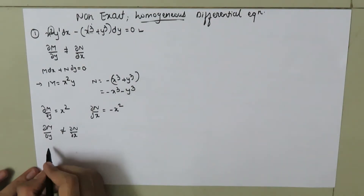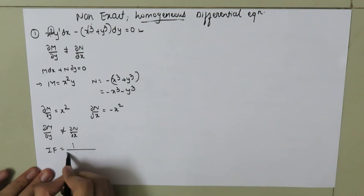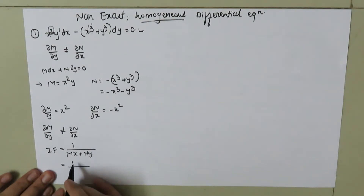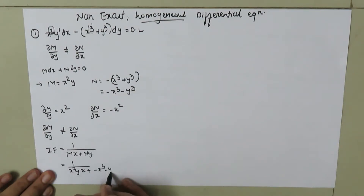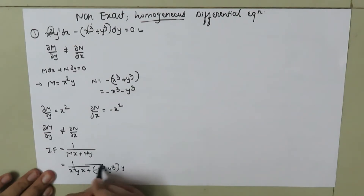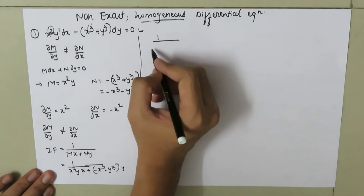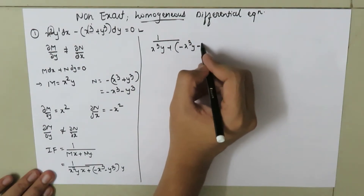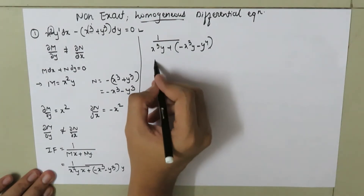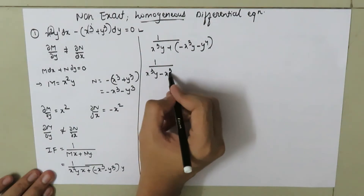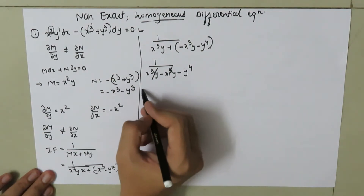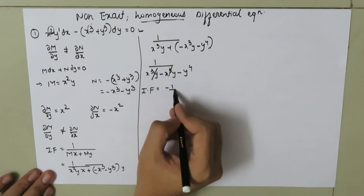In this case, the integrating factor is given by 1/(Mx + Ny). So here it will be 1 divided by (x squared times y times x) plus (negative x cubed minus y cubed) times y. This gives 1 divided by (x cubed y minus x cubed y minus y to the power 4). The positive x cubed y and negative x cubed y cancel, so the integrating factor is negative 1 over y to the power 4.